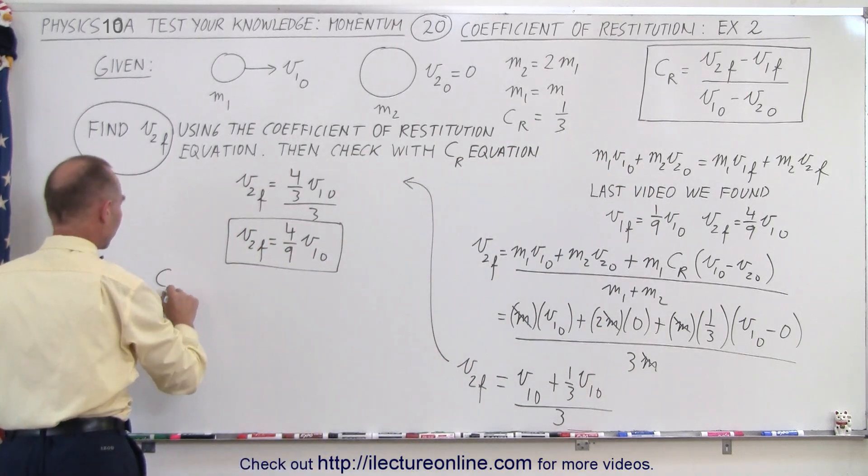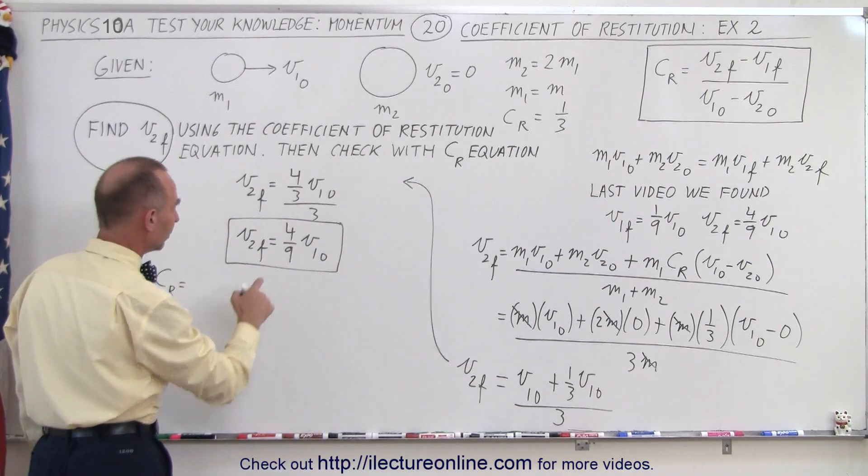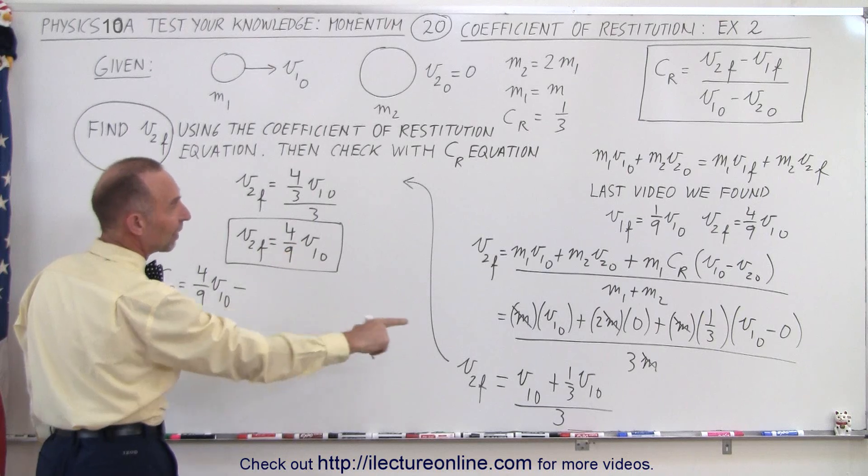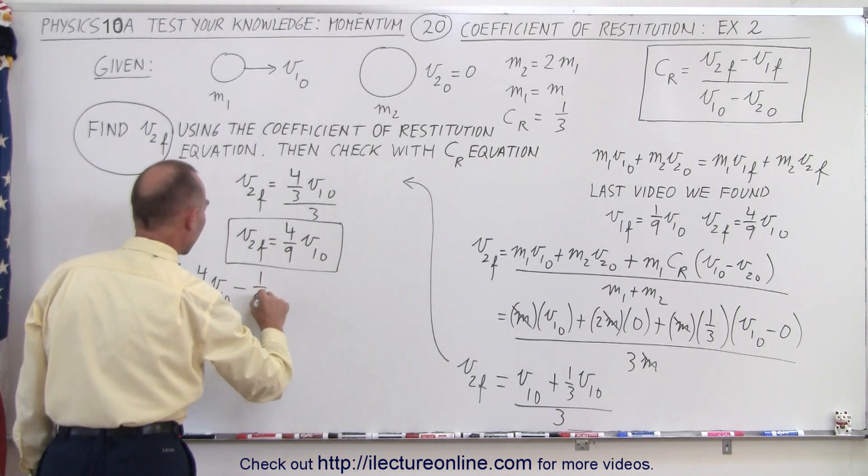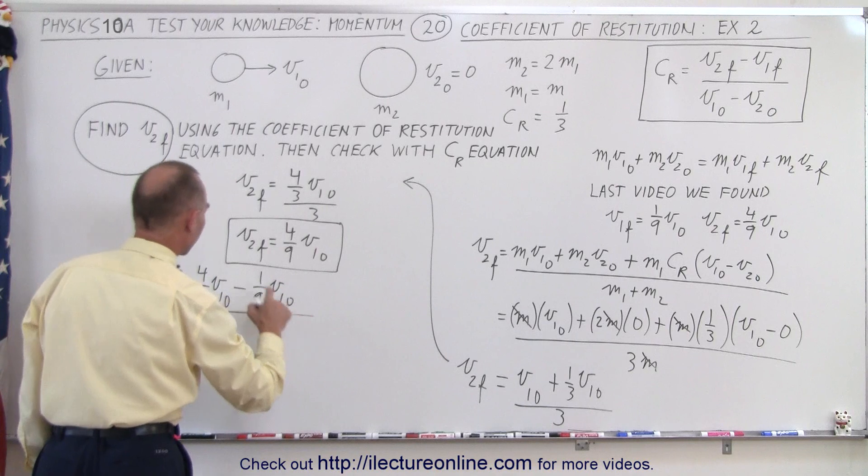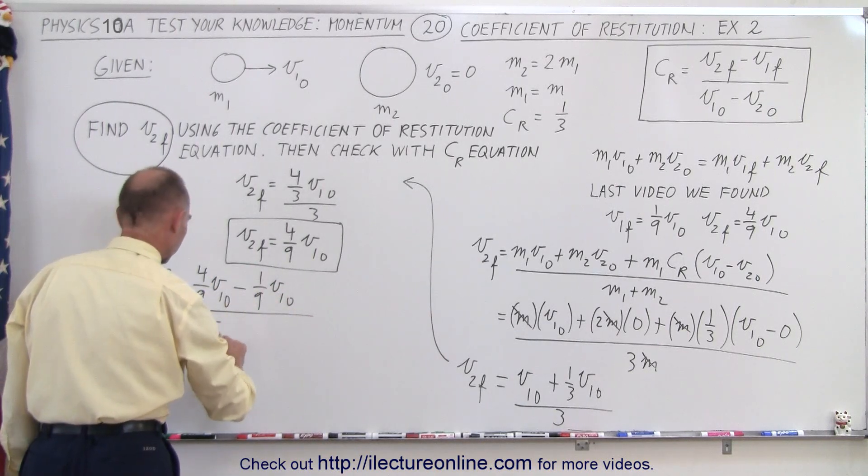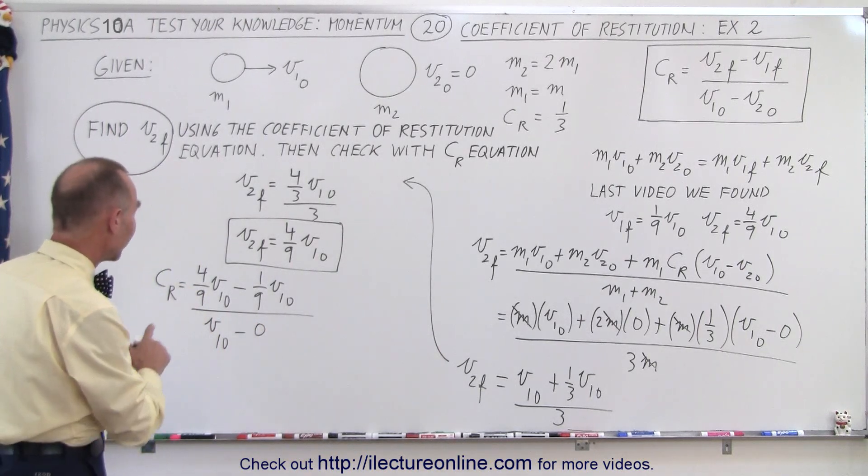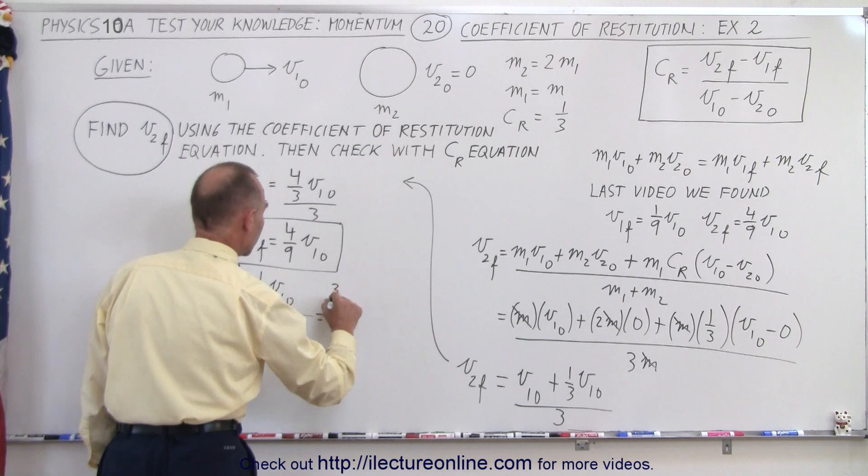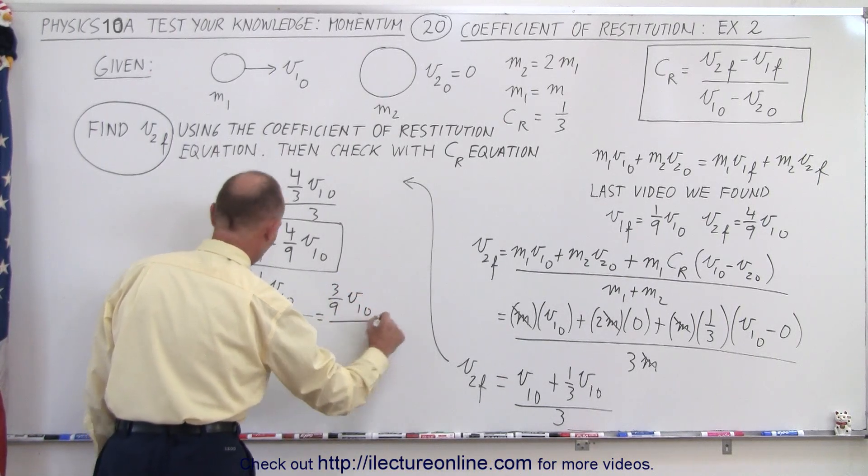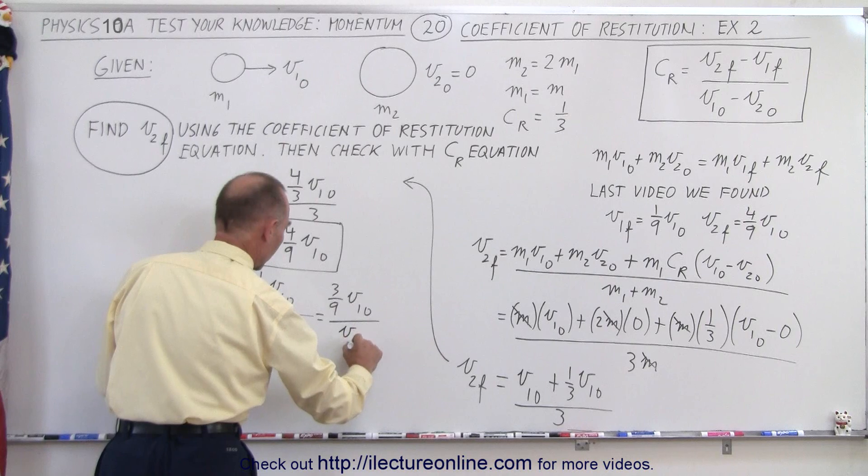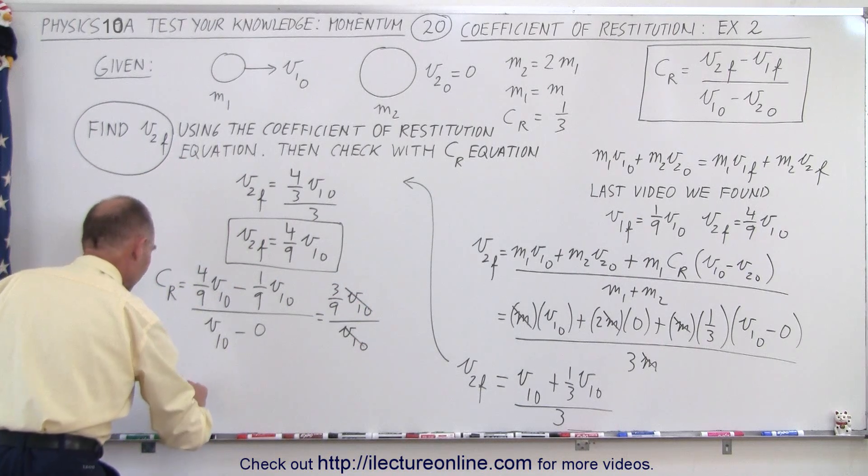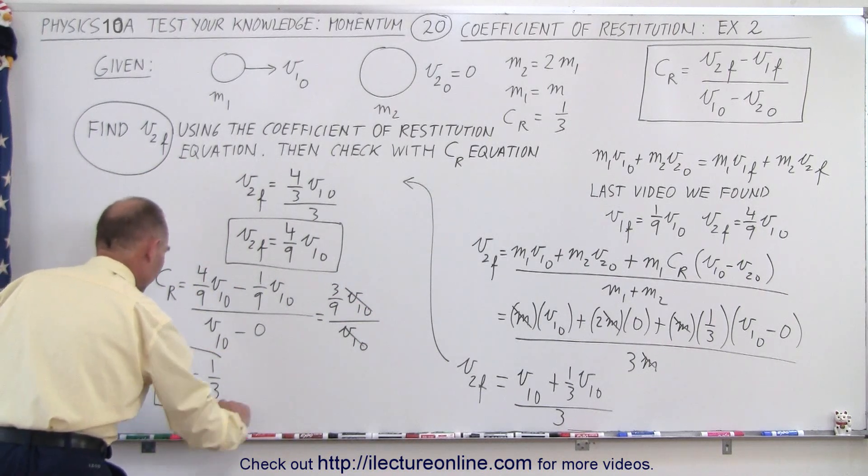The coefficient of restitution is equal to v2 final, which is four-ninths v1 initial, minus v1 final, which was one-ninth v1 initial, all divided by v1 initial minus 0. So four-ninths minus one-ninth equals three-ninths v1 initial divided by v1 initial. The v1 initials cancel out.